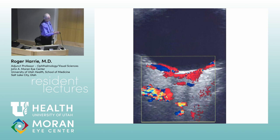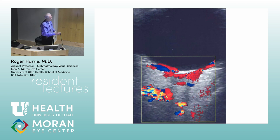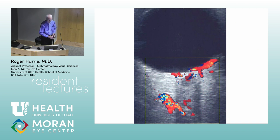A normal Doppler shows the globe, then behind it the optic nerve shadow, the ophthalmic artery, central retinal artery, central retinal vein, and ciliary arteries. In a hemi-central artery occlusion, you can see one part is dead — the blood flow is gone — while the rest of the area is still vascularized, demonstrating the hemi pattern clearly.